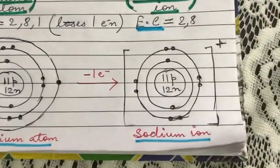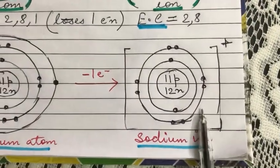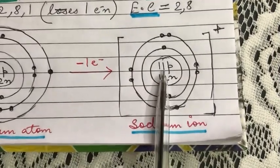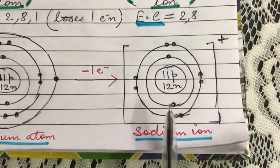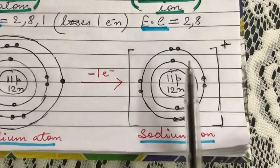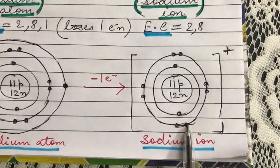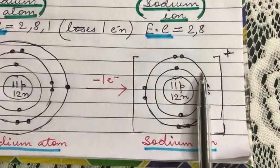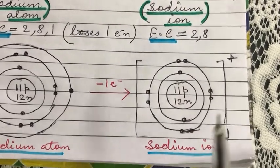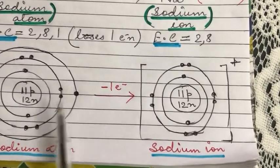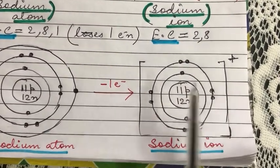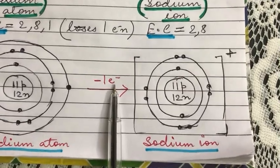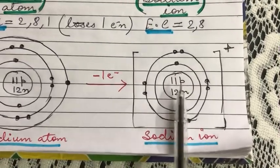After losing this one electron, its structure looks like this: it now has 11 protons, 12 neutrons, two electrons in the first shell, and eight electrons in the outermost shell — the one electron is gone.